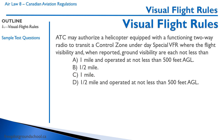Here's another helicopter question from your PSTAR test: ATC may authorize a helicopter equipped with functioning two-way radio to transit a control zone under special VFR, where flight visibility and ground visibility are each not less than — for a helicopter, it's half a mile. The reason is a helicopter can slow right down and proceed much more slowly with greater caution to avoid obstacles, unlike an aeroplane.